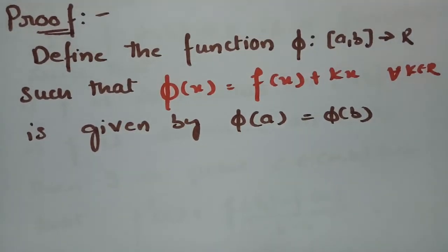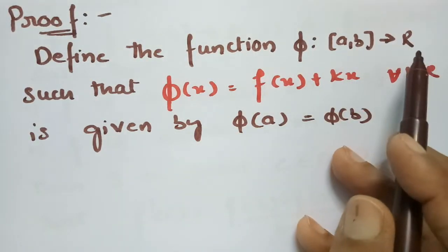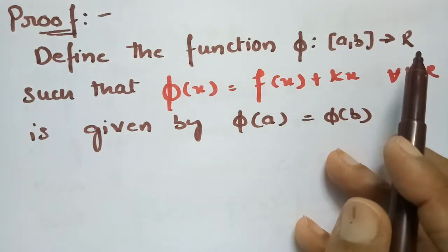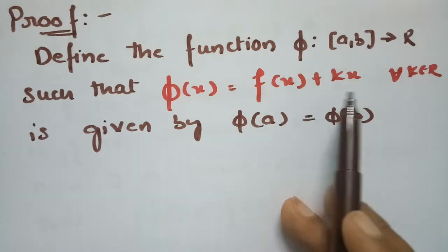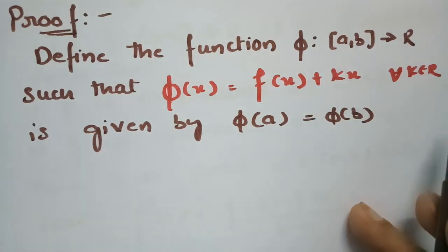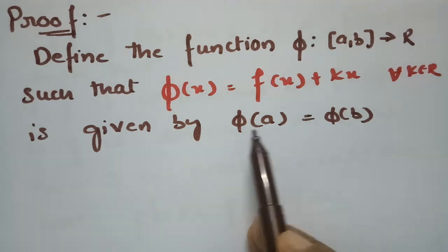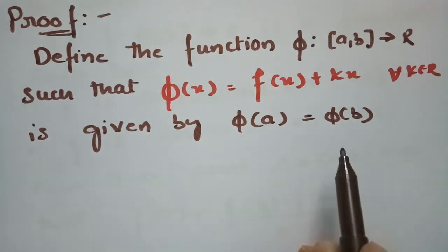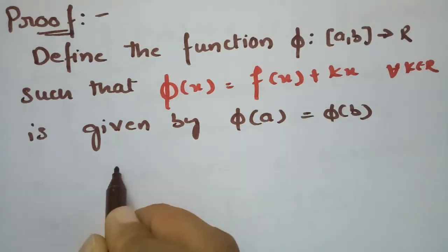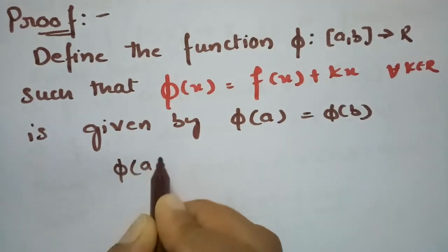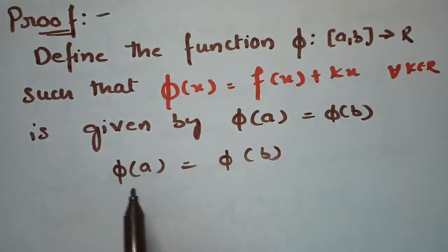Here is the proof. We define a function φ mapping from closed [a, b] to ℝ such that φ(x) = f(x) + kx, for every k belonging to ℝ, given by the condition φ(a) = φ(b). First of all, we are given that φ(a) = φ(b), and now I will substitute to find k.